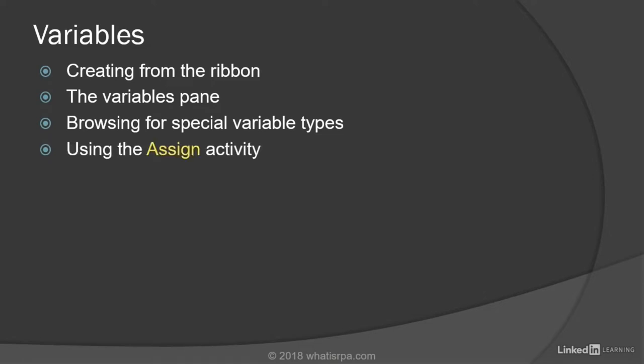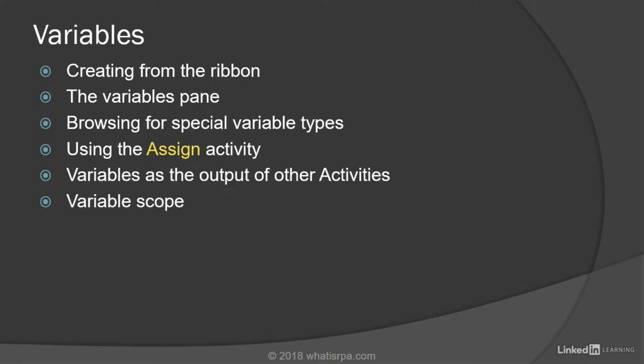Then we'll move on and talk about using the assign activity to create new variables and to update their values. We'll discuss how variables can be used as the output of other activities. I'll spend a little time talking about variable scope. And finally, sometimes you'll create variables with a limited scope and realize later that you need access to those variables from other activities outside of the original scope, so we'll discuss how to promote a variable to global scope.